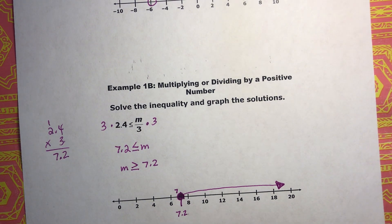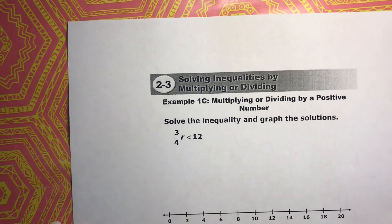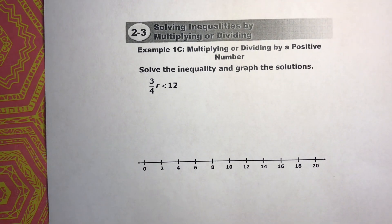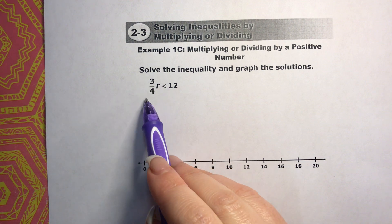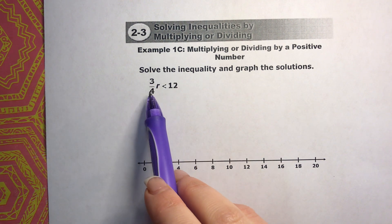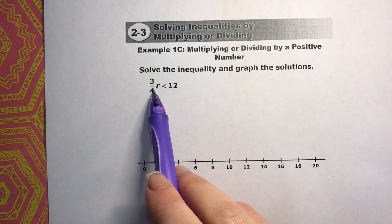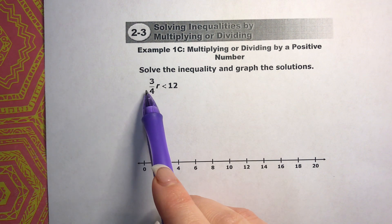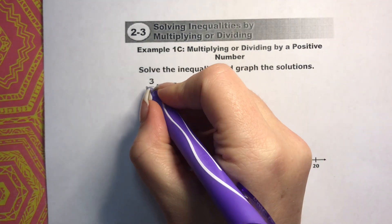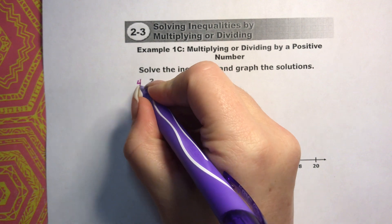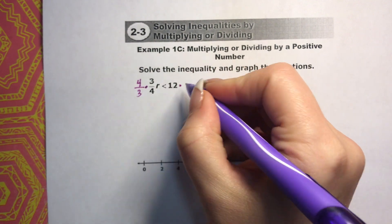Alright, that is 1b. Let's go ahead and talk about 1c. Alright, so we're trying to get r by itself. Right here, it's 3 fourths times r. And remember, this is multiplied, r is being multiplied by a fraction. And how we get that fraction to the other side is by multiplying by the reciprocal. The reciprocal is just when you exchange the top to the bottom and the bottom to the top.